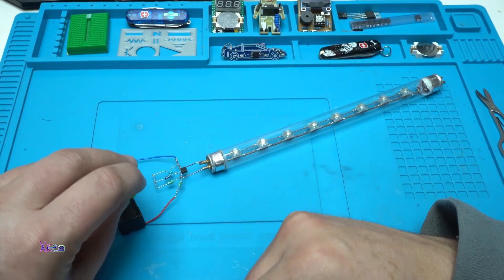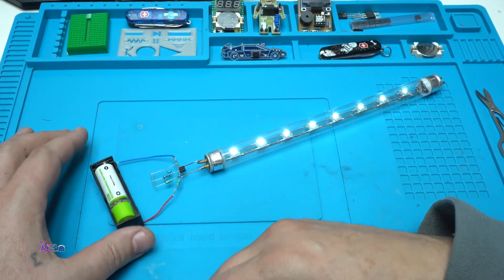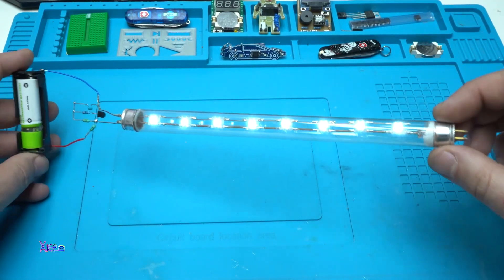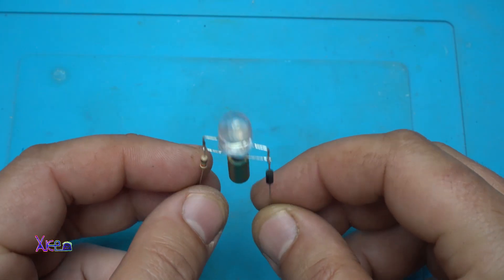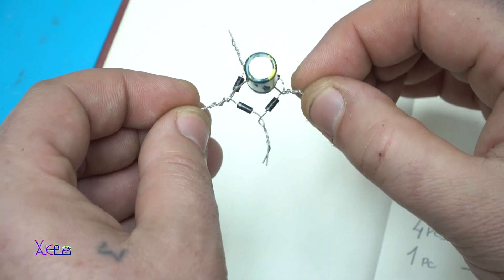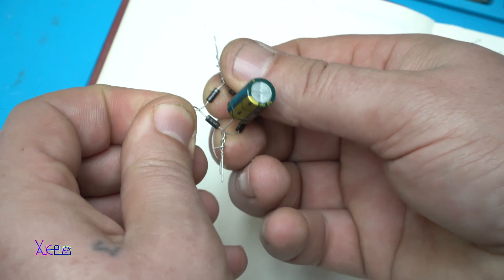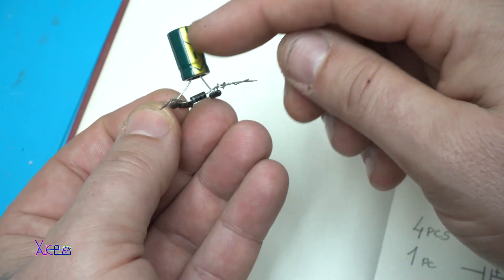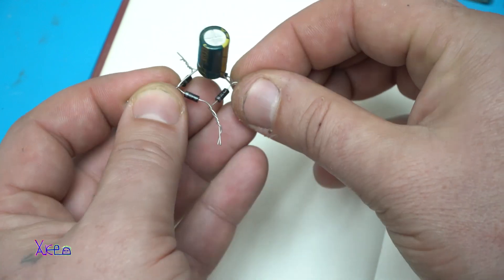Okay, let's try it and it's working. Complete the bridge rectifier with the capacitor. This one is the negative.